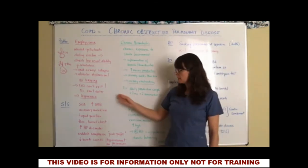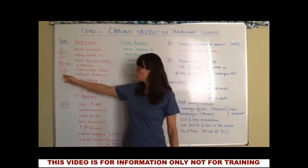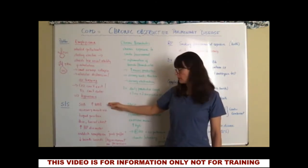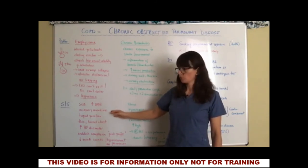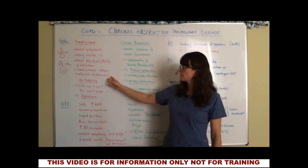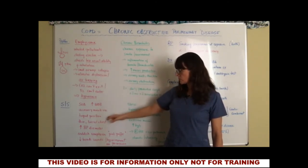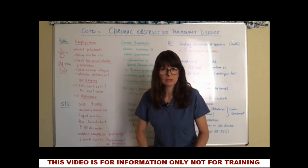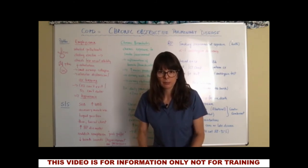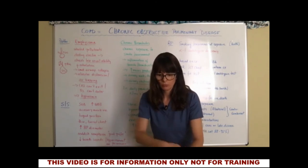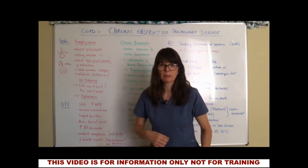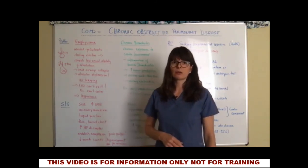Coming back to emphysema signs and symptoms: because the CO2 can't exit and O2 can't enter, the patient will have shortness of breath and increased work of breathing, and may use accessory muscles. A lot of patients find it easier to breathe in the tripod position — leaning forward, sometimes with hands on their knees, which allows for more expansion and easier excretion of CO2.